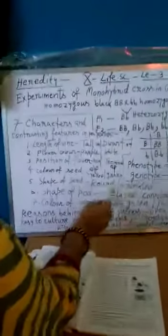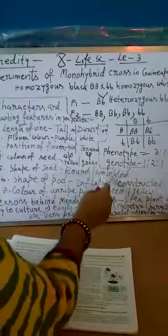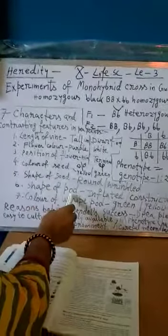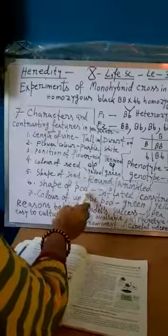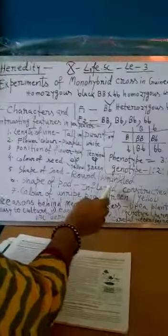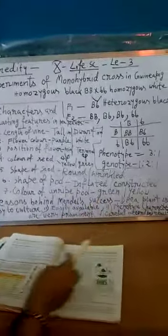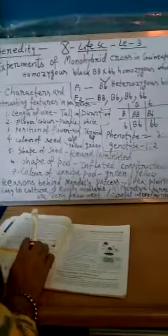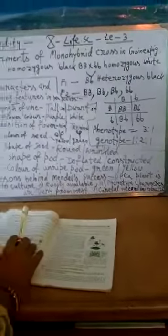Shape of seed can be round or wrinkled. Fully round or wrinkled means it has lines and is not fully round in shape. Shape of pod, the pod where seeds remain, can be inflated or constricted. It can be fully flat or it can have constrictions, not fully flat. Color of unripe pod, the unripe pod color...